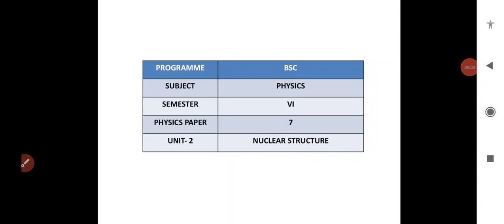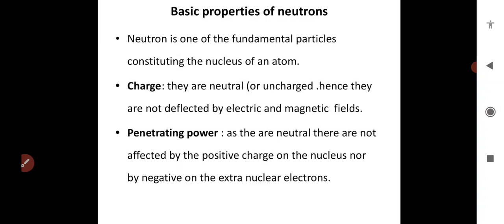Hello students, good afternoon. We have completed paper 7, one chapter on nuclear decay. This is the second unit, nuclear structure. The first topic is the basic properties of neutrons.